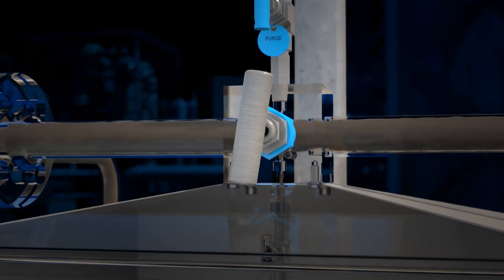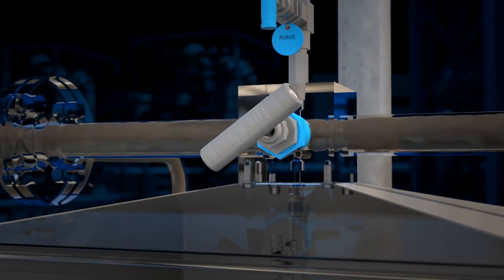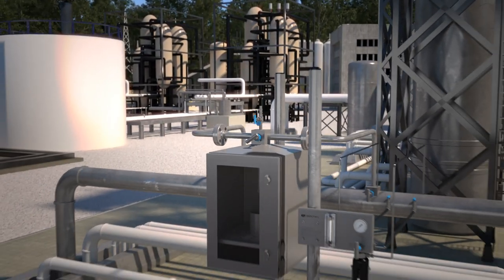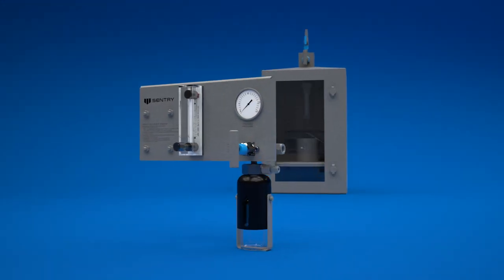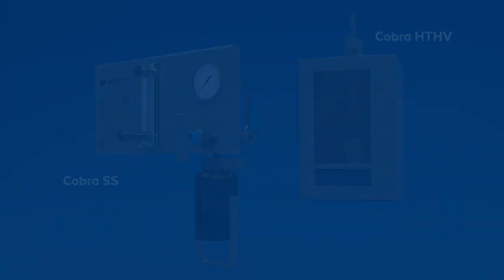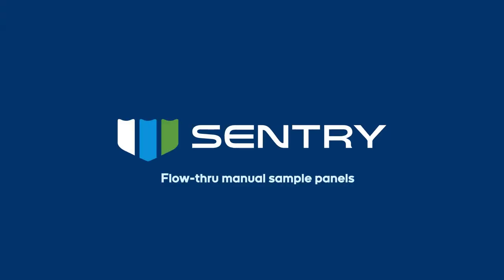The multi-turn valve even allows the operator to throttle the sample flow with precise control. Don't settle for unsafe and unreliable process sampling. Move up to a safer solution and a better experience with Sentry Cobra flow-through manual sample panels designed specifically for hydrocarbon processing.